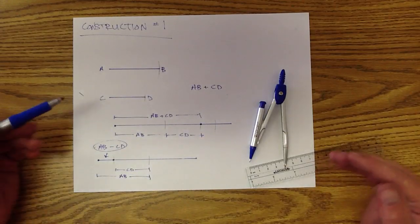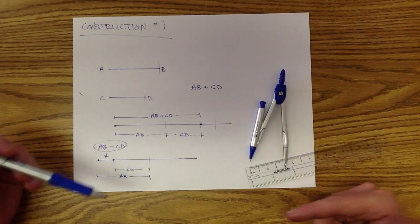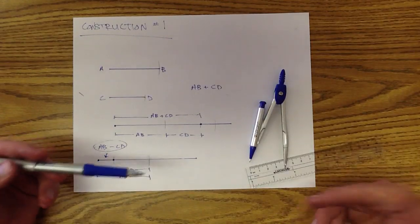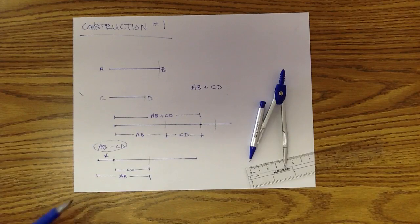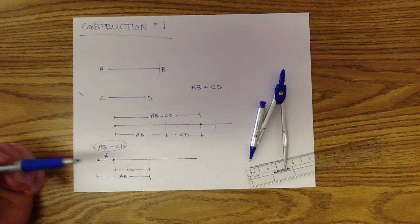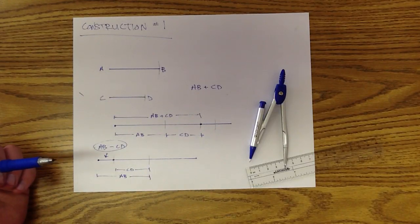So hopefully this is illustrating and showing you how you can use your compass and your straight edge, your protractor or your ruler, as well as a pen and pencil to make different line segments depending on the length they're asking you to show.